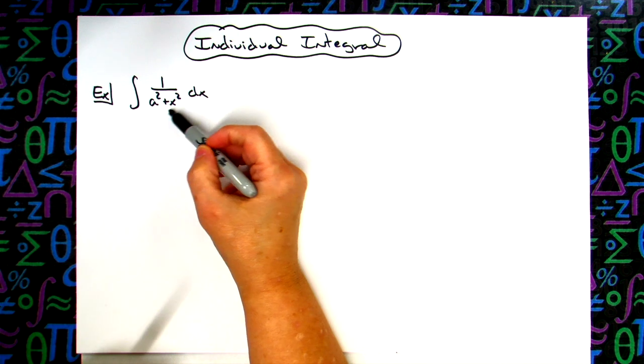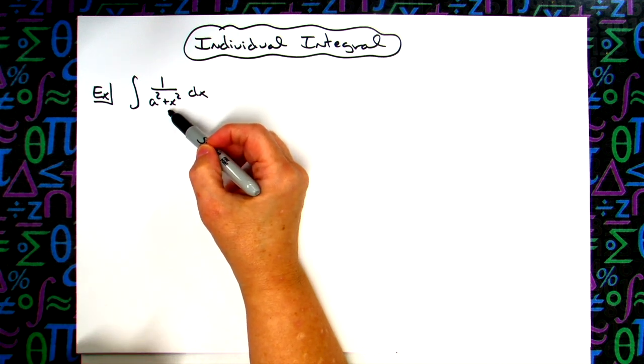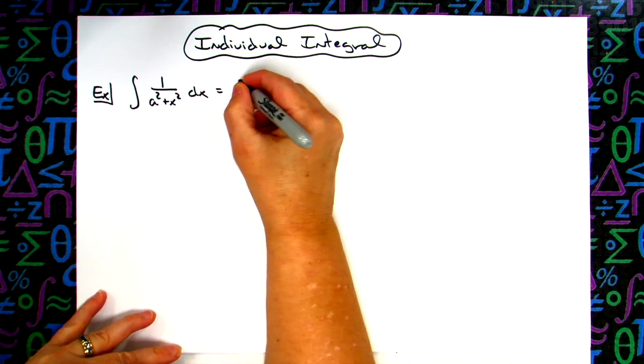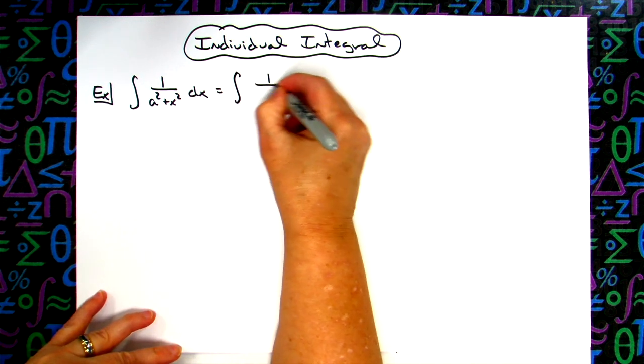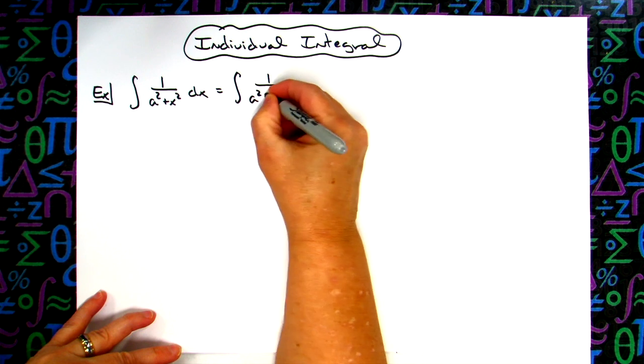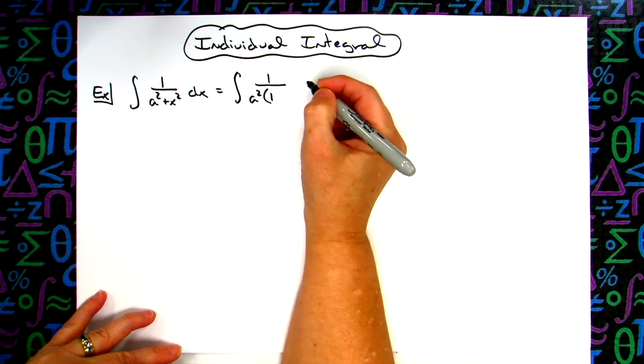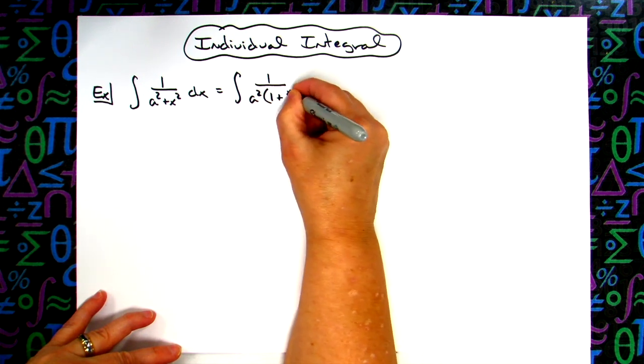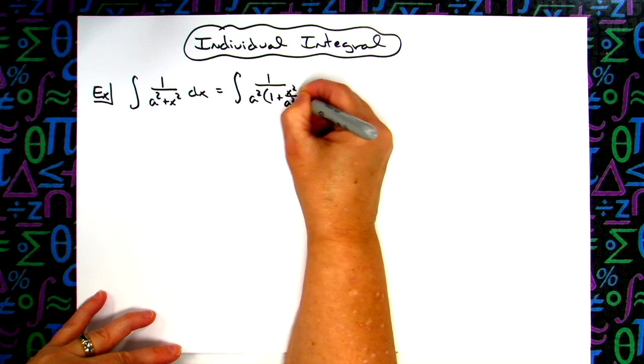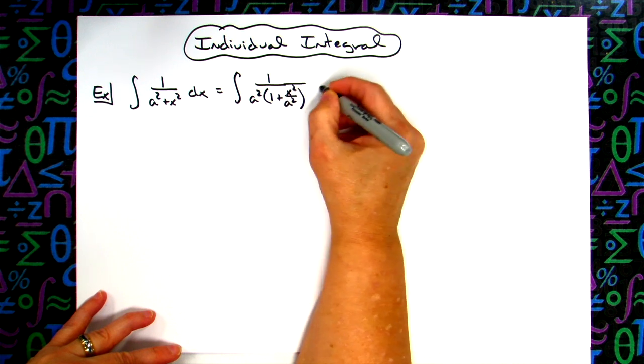First thing we're going to do is manipulate this bottom here. We are going to factor out an a squared. So we're going to have a 1 on top. We'll factor out the a squared. That's going to leave us a 1 in the first term and then x squared over a squared in the second term.